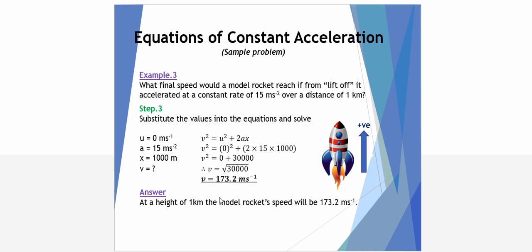Final step is, we substitute our values in. We substitute in a U of 0, an A of 15 and an X of 1,000. Which gives us V squared equals 30,000 or V is the square root of 30,000. So, in this fictitious example, after a height of 1 kilometre, this model rocket would have a final speed of 173.2 metres per second.